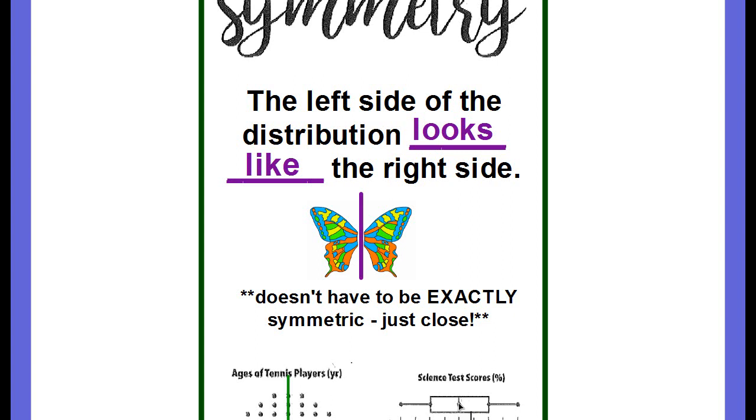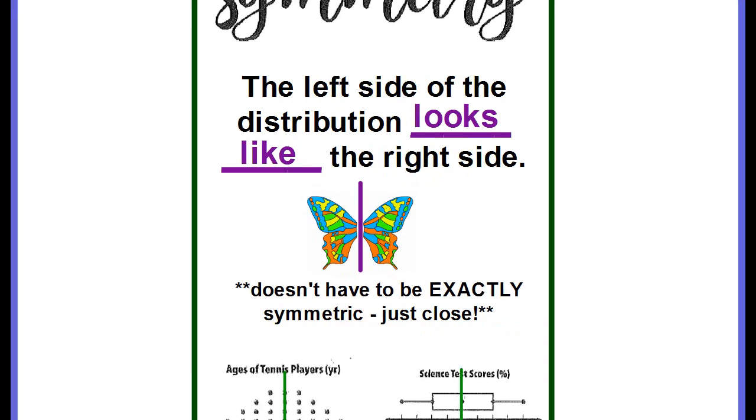This is called a box plot. And if you draw a line down the center, you can tell the same thing. The right and the left side look to be the same. So it is symmetric. It has symmetry.